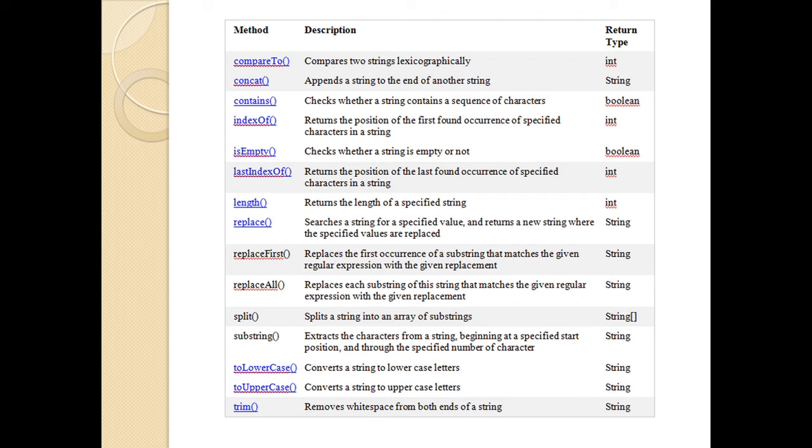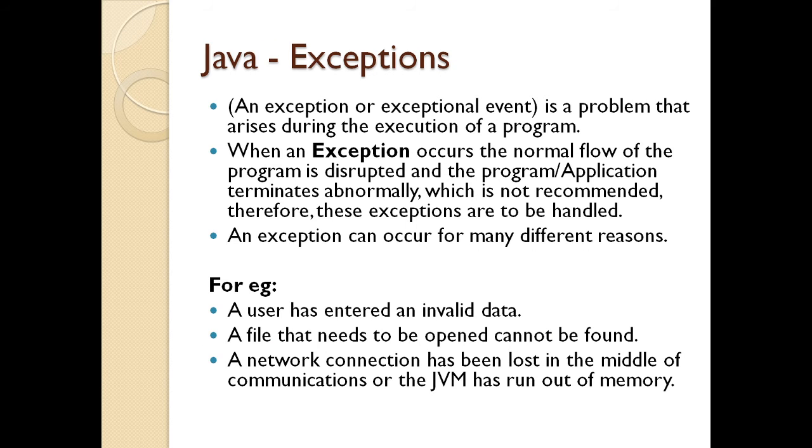Split method splits a string into an array of substrings. The substring extracts the character from a string beginning at the specified start position through the specified number of characters. ToLowerCase, this function is going to convert the string into a lowercase character. Similarly, toUpperCase converts the string to the uppercase manner. The trim function removes white space from both ends of the string.